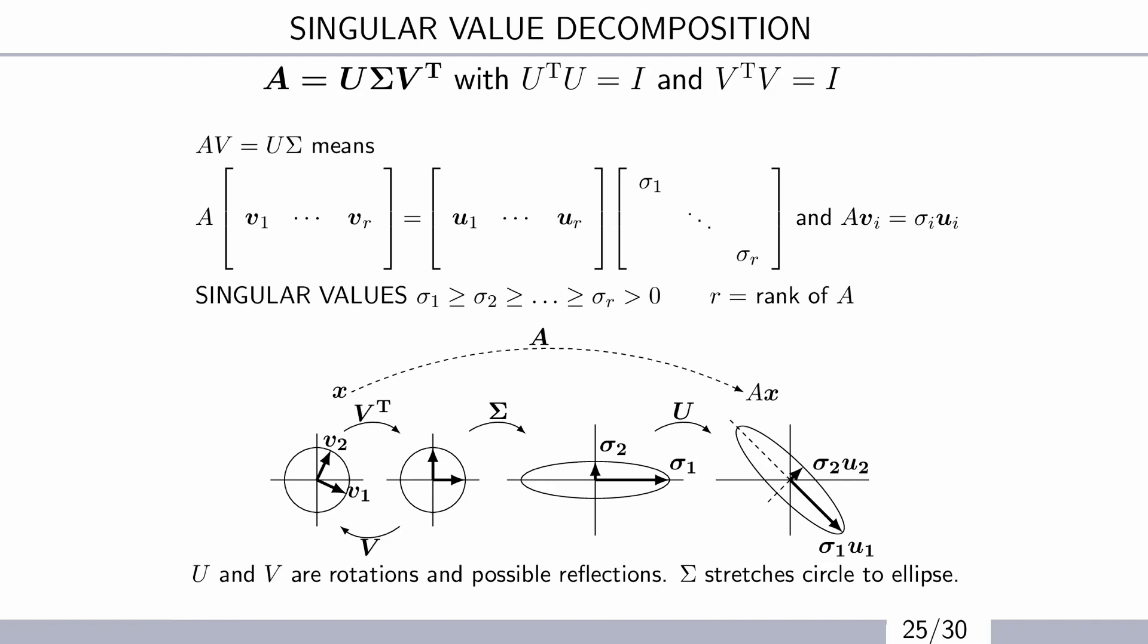And then in between are not eigenvalues, but singular values. So here's the key. A times the V's gives sigma times the U's. So that's the replacement for Ax equals lambda x, which had x on both sides. And now we've got two.